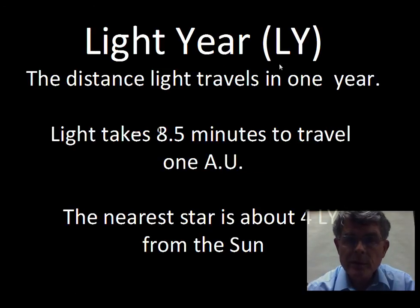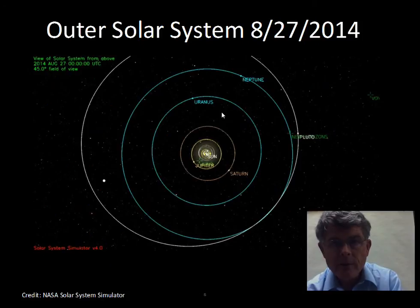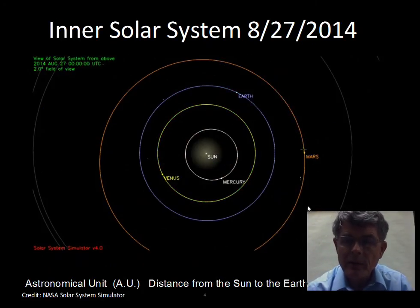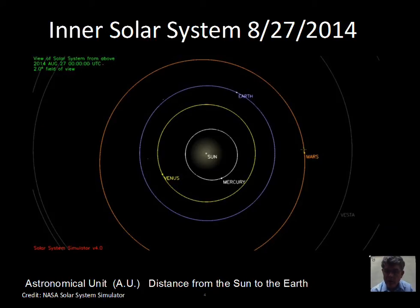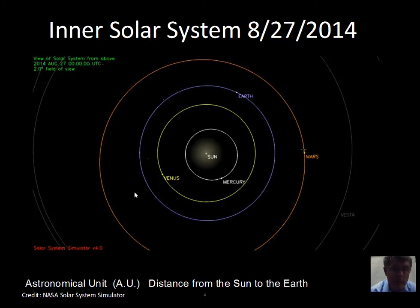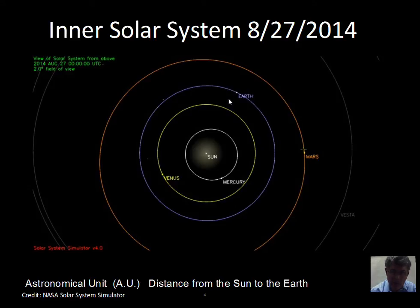Professor Clements here, as we consider the scale of the solar system, the astronomical unit, and the unit used for stars, the light year distance. Our solar system is shown here as of August 2014. The NASA solar system simulator website can be used to produce this type of picture — just do a Google search for 'solar system simulator.' The distance from the Sun to the Earth, this average distance, because the Earth's orbit is not a perfect circle, is called the astronomical unit. It's a convenient ruler to use when discussing distances to objects in the solar system.